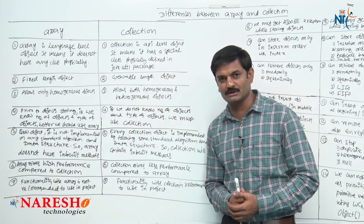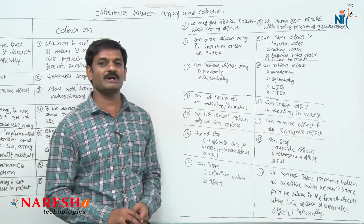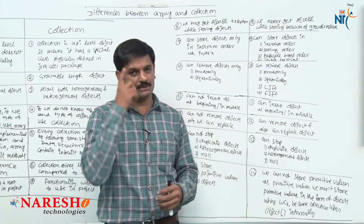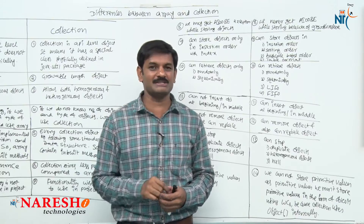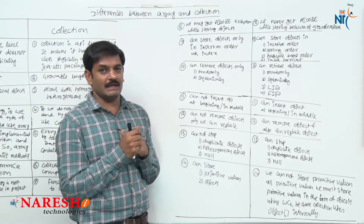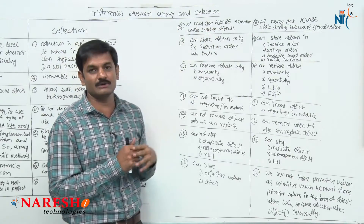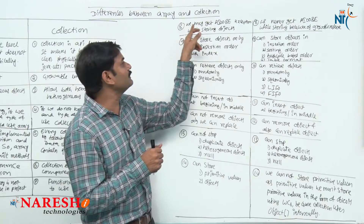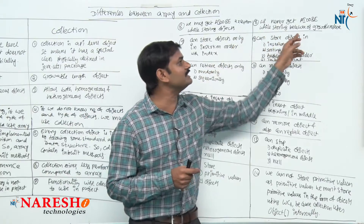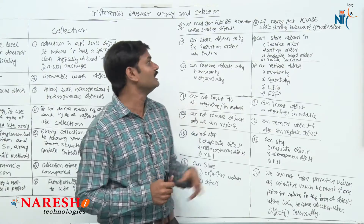In addition to these seven points, we have seven more based on functionality. These next seven are based on operations. Eighth difference: while storing objects in array beyond its length, we will get an ArrayIndexOutOfBoundsException. Whereas in a collection, you will never get that exception because collection is growable in nature — capacity is automatically increased.